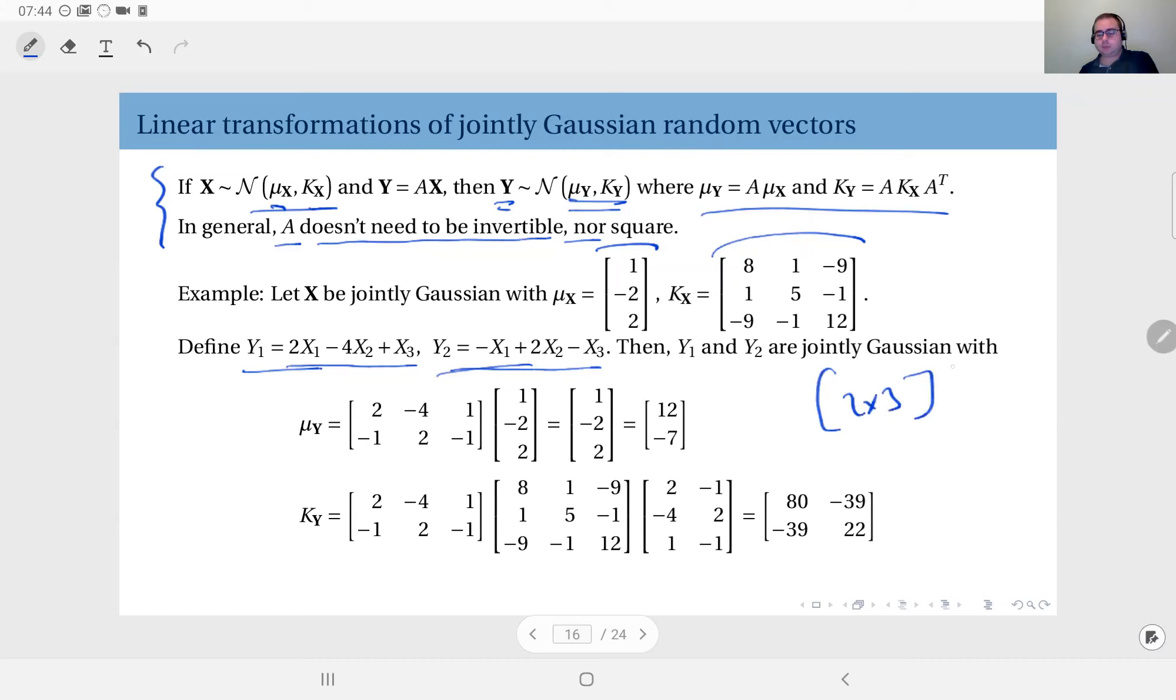When I multiply it from left, so this will be a two by three matrix, multiply that with my original random vector which is three by one. The result will be two by one, which is the random vector Y. This is my transformation matrix. You see Y1 is equal to this matrix here times X1, X2, X3—2X1 minus 4X2 plus X3. And Y2 equals minus X1 plus 2X2 minus X3.